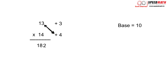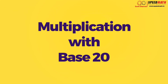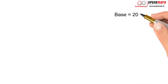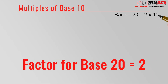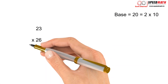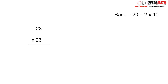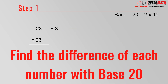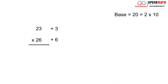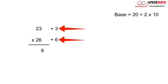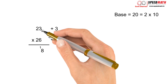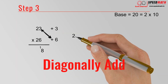Now let's take multiplication based on base 20. Solving with base 20 is similar to base 10, except that 20 is 2 × 10, so the factor here is 2. Let's multiply 23 and 26. Same steps: 23 is 3 more than 20, and 26 is 6 more than 20. Take the product of the differences — it must be single digit — so 3 × 6 = 18: keep 8, carry forward 1.